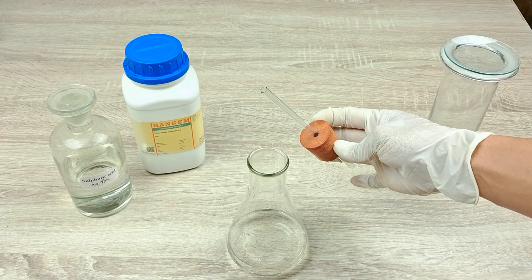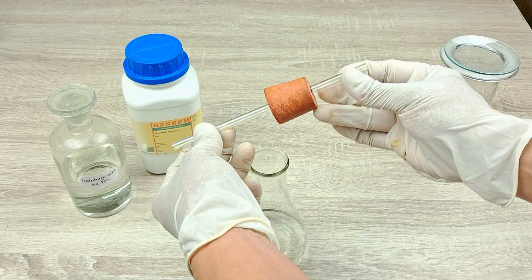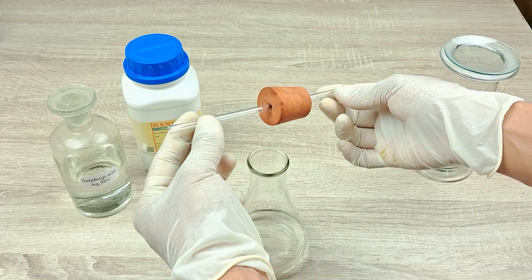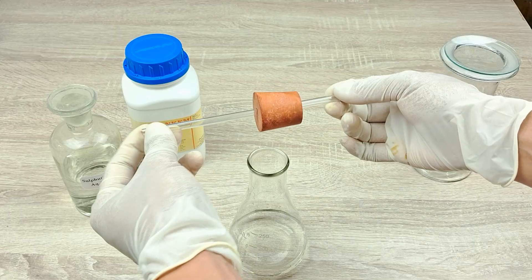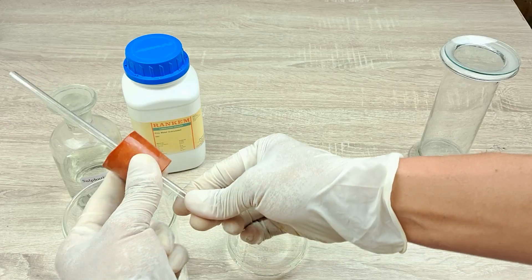Meanwhile, take the rubber cork with one hole and introduce the delivery tube into the hole. Allow about 5 cm length of the tube to protrude from each end of the hole. Moisten the rubber cork with water for an airtight seal.